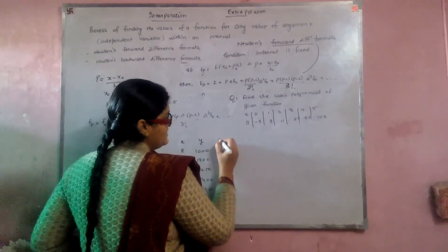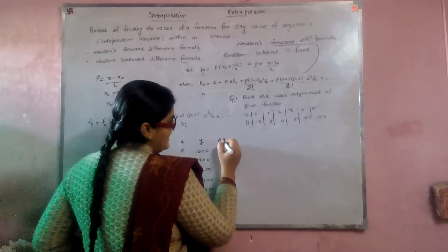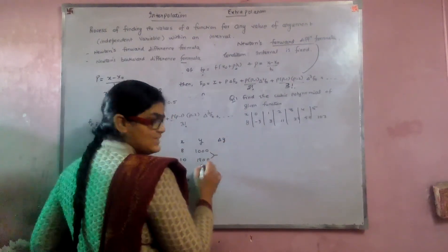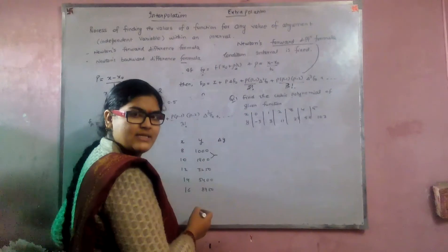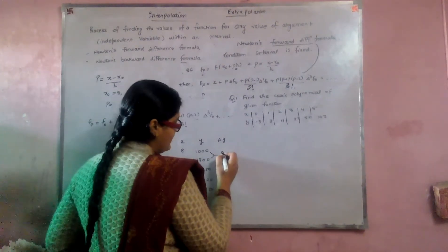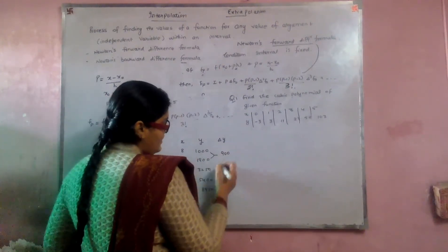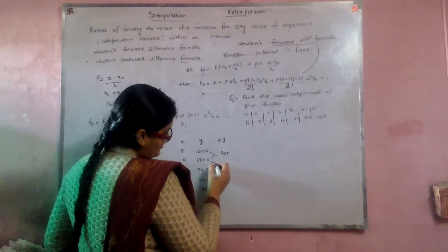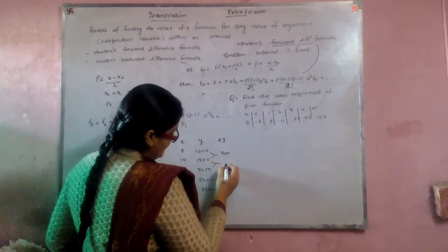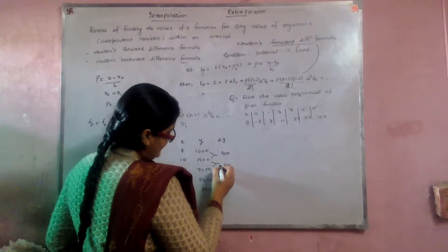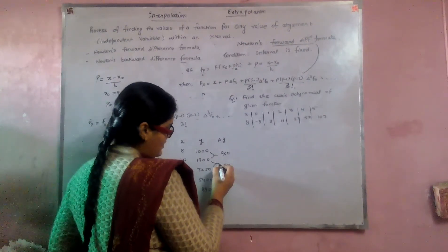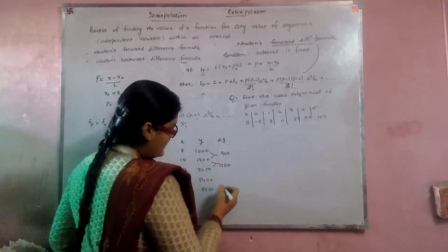First-order differences: 1900 − 1000 = 900, 3250 − 1900 = 1350, 5400 − 3250 = 2150, 8950 − 5400 = 3550.